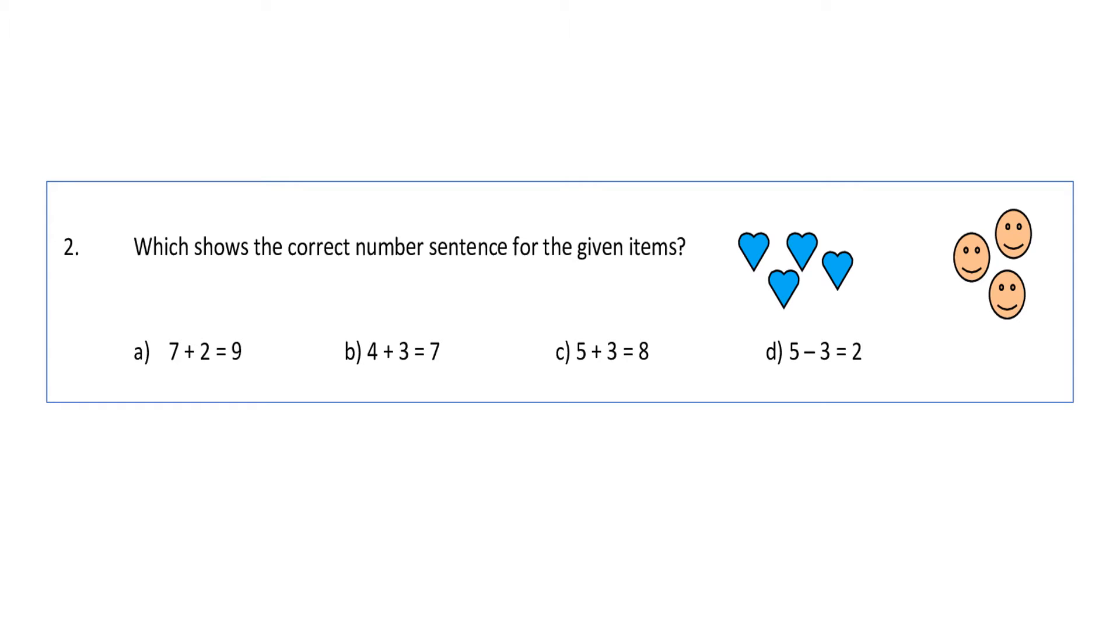Question 2: Which shows the correct number sentence for the given items? We have to count and match the addition statements. So 1, 2, 3, 4 plus there are 3 smileys, so it will be 4 plus 3 equals 7. Option B is correct.